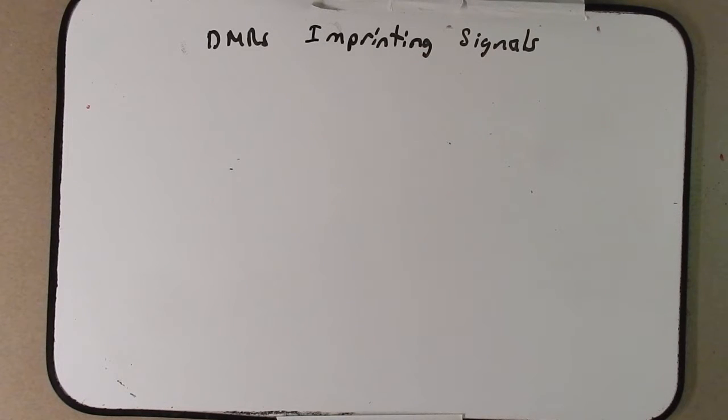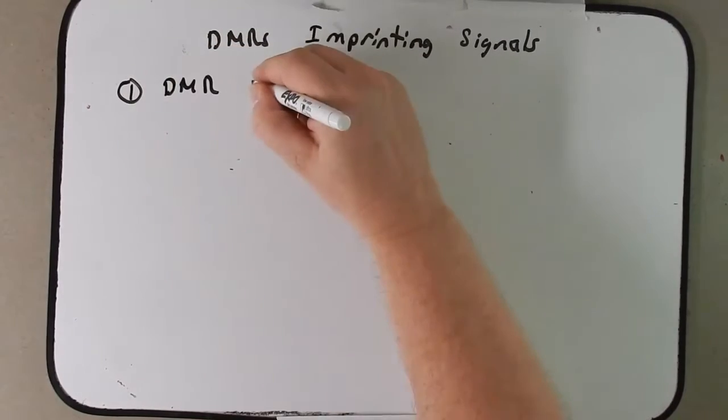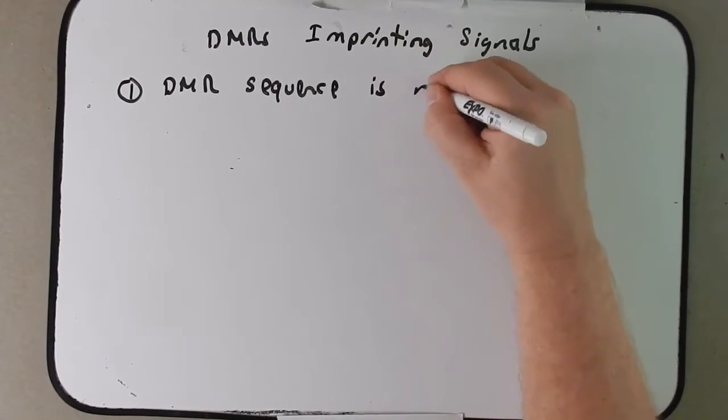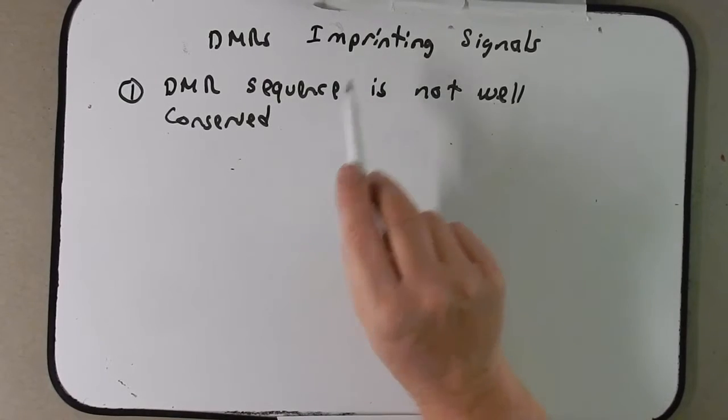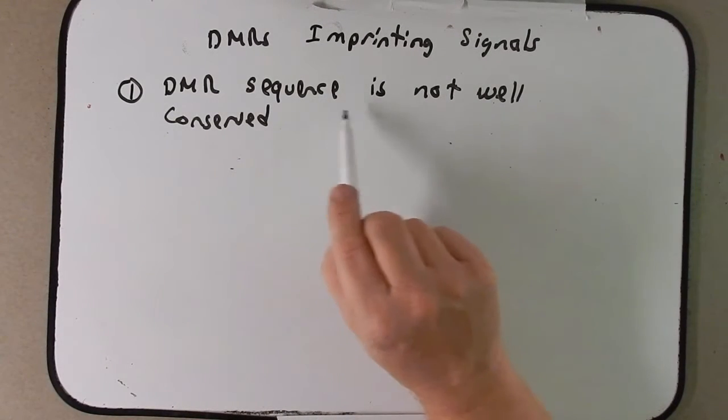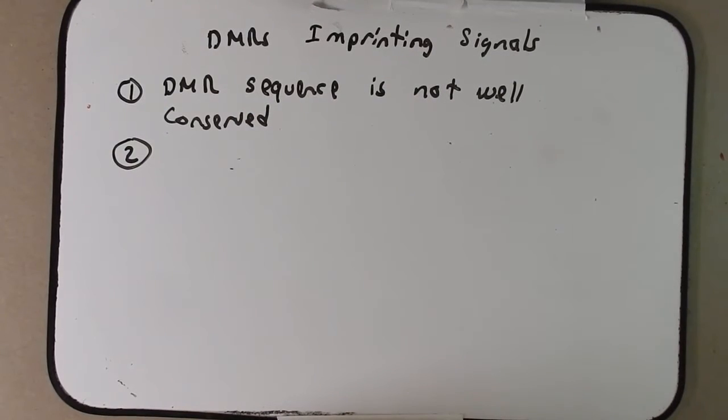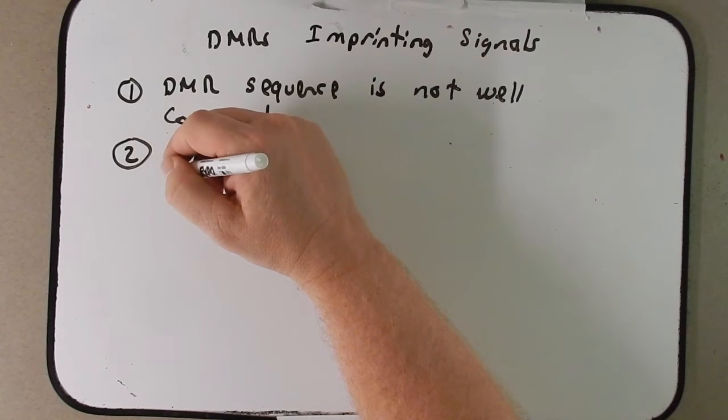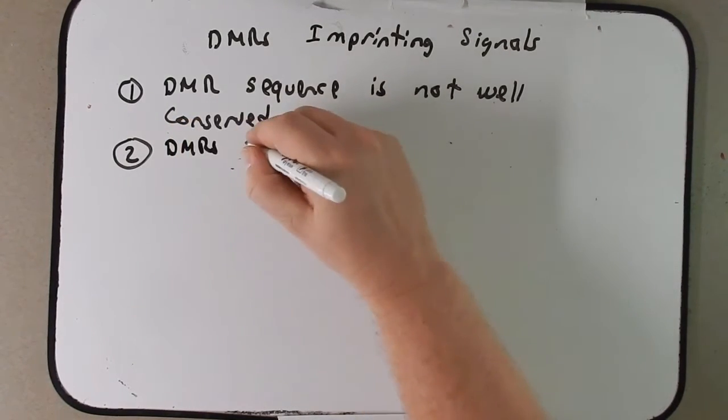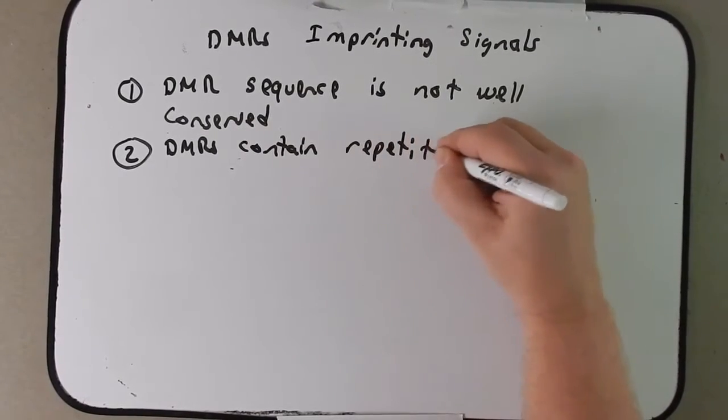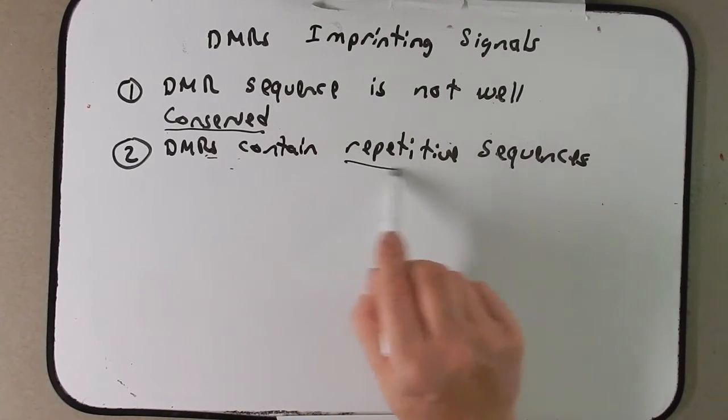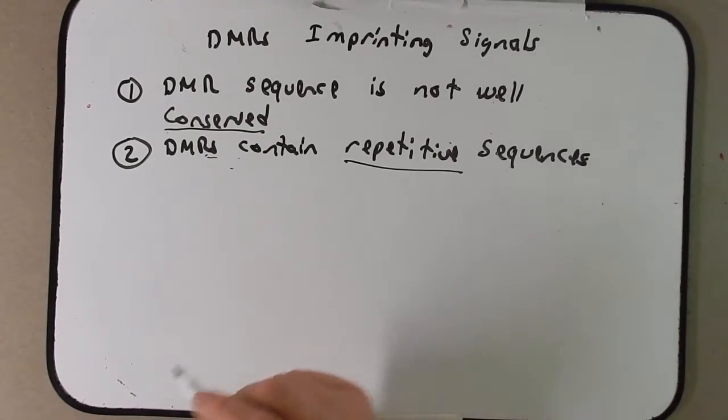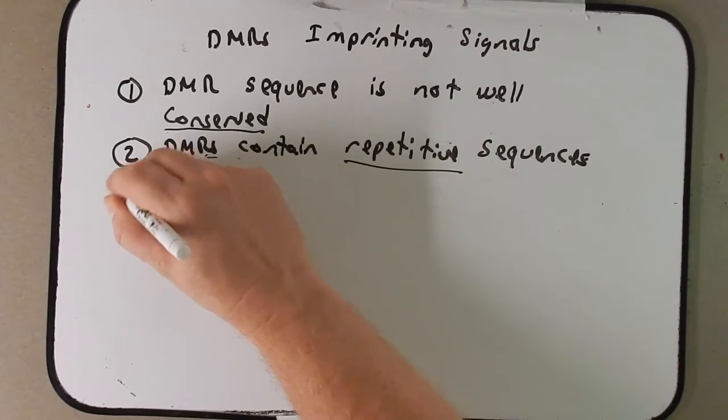What is it that indicates to be methylated or not methylated to exert that imprinting? Well, interestingly, the DMR sequence is not well conserved. It would have been easy to explain if DMRs associated with imprinted genes had a very consistent sequence, a conserved sequence. But that's not the case. So it's not likely in the sequence itself. If you remember, I talked about the repetitive sequences. DMRs contain repetitive sequences, not the same because it's not conserved, but we're more likely to see repetitive sequences in DMRs of imprinted genes as opposed to promoter regions in non-imprinted genes.